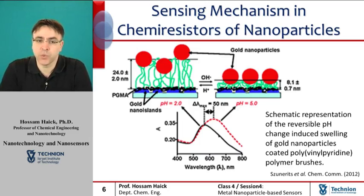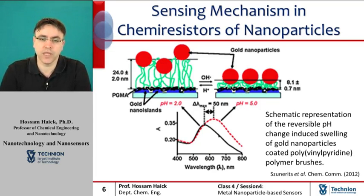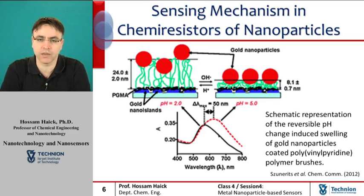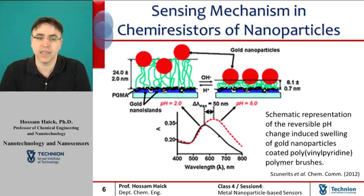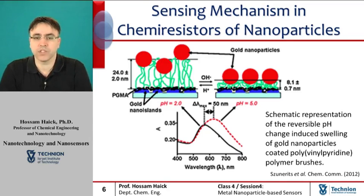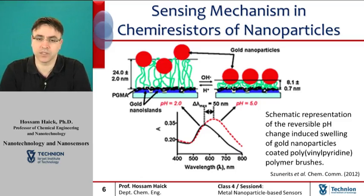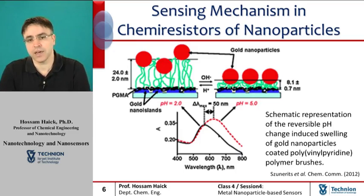One example of the swelling mechanism in nanoparticle-based sensors deals with the use of molecularly modified nanoparticles for sensing pH levels in water. It was found that indication of the pH level can be achieved by monitoring the swelling and shrinking of responsive ultrathin polymer brushes by means of the absorption of gold nanoparticles attached to a specific substrate. As seen in the bottom figure, when the pH was changed from 5 to 2, the polymer brush swelled to a thickness three times the original thickness, namely from 8.1 nanometers to around 24 nanometers. This change shifts the absorption peak as seen in the image.